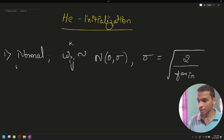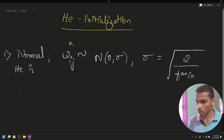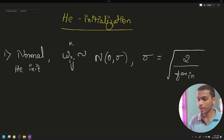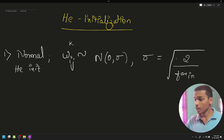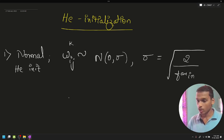This is He normal initialization. The weights follow a normal distribution with zero mean and standard deviation sigma, where sigma is equal to the square root of 2 divided by fan in.